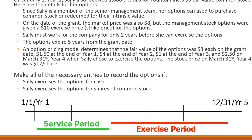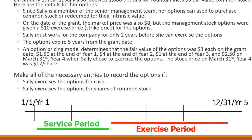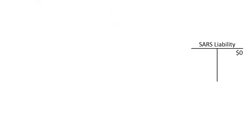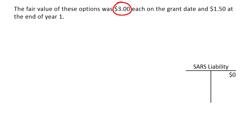The option pricing model — usually Black-Scholes — determines the fair value of the options: $3 each on the grant date, $1.50 at end of year one, $4 at end of year two, $1 at end of year three, and $2.50 on March 31st of year four when she chose to exercise, with a stock price of $12. Unlike Alice, where we made a journal entry on the grant date for fair value, with liability options we make no entry at all until the end-of-year adjusting entries. That original $3 fair value is irrelevant.